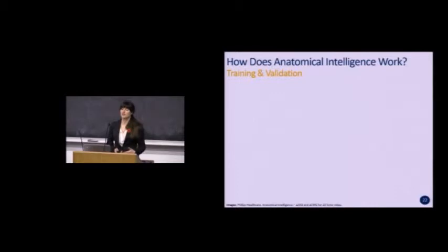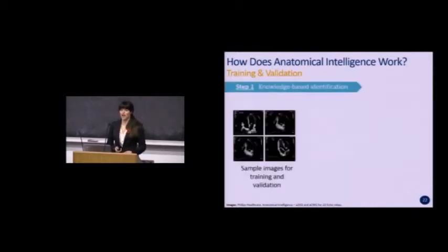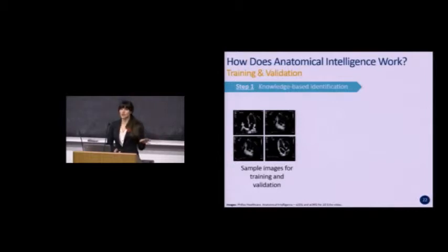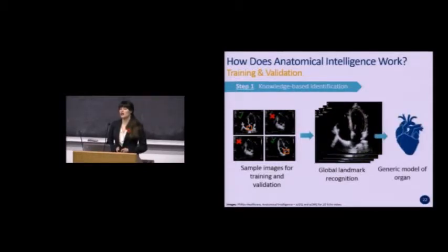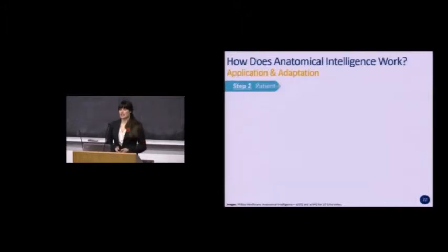This is a two-step process. The first step is knowledge-based identification: you start with a training set of images from hundreds of different patients, some positive for the landmark of interest and some negative, along with a separate validation set to ensure the trained system has adequate accuracy. The system picks out all recognized landmarks, allowing the image to be oriented. By doing this at a variety of orientations, a generic model of the organ can be built.